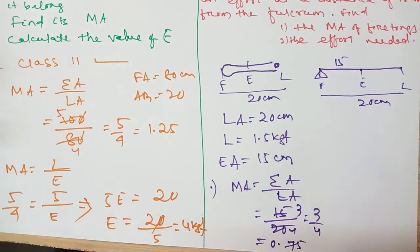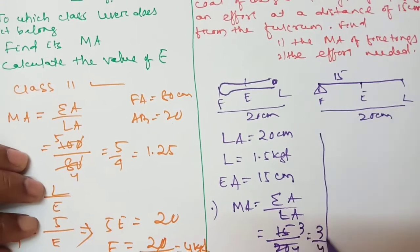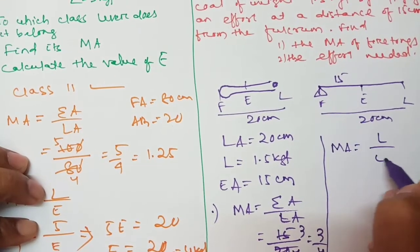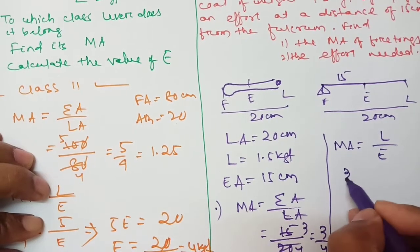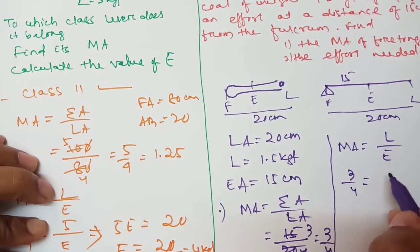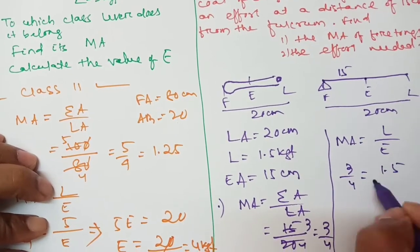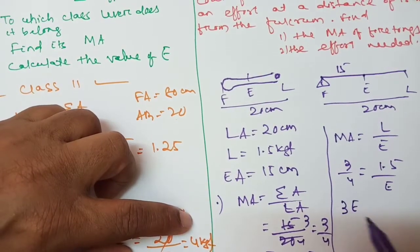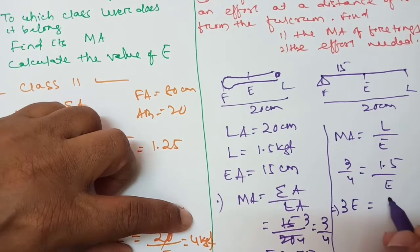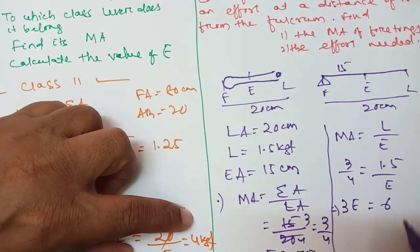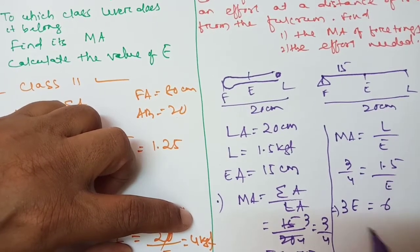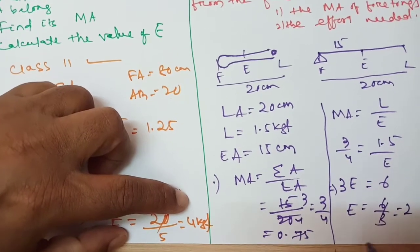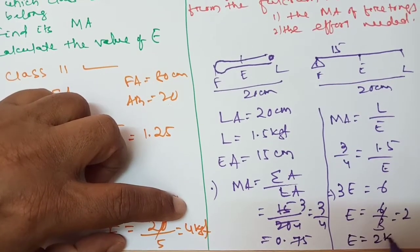Now find effort. MA = Load by Effort, so 3 by 4 = 1.5 by effort. Cross-multiplying: 3 × effort = 4 × 1.5 = 6. Therefore E = 6 by 3 = 2 kgf. So the effort is 2 kgf.